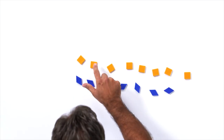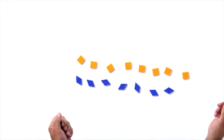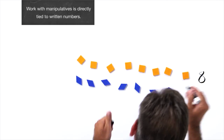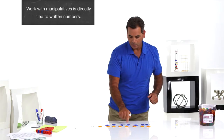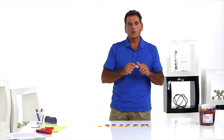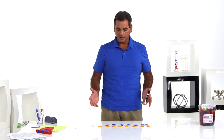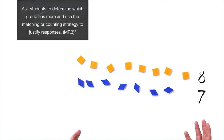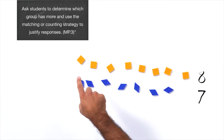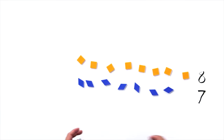Now they can count them: one, two, three, four, five, six, seven, eight — touching and counting and writing the number. Count the blue: one, two, three, four, five, six, seven. Write the seven. Now we want students to notice that we're going to compare the number to the group of objects. They can say: eight must be bigger than seven because the eight is with the orange, the seven is with the blue, and there's more orange than blue — so eight must be more than seven.